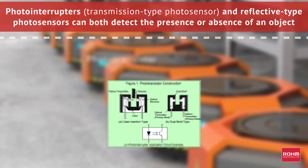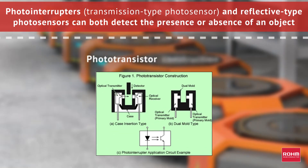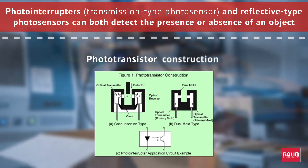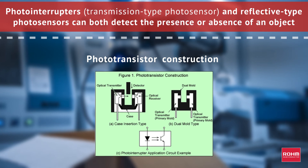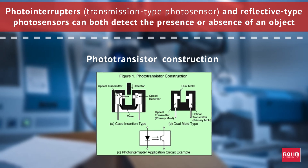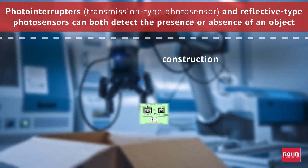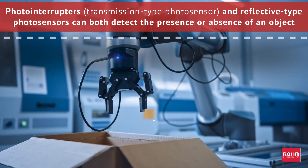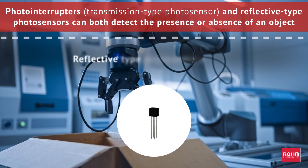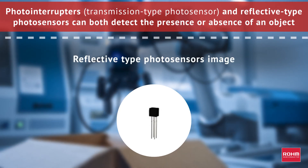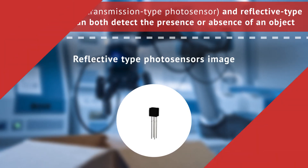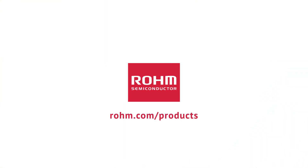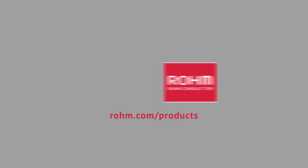This differs from reflective type photo sensors that detect the presence or absence of an object by emitting light and detecting the reflection from it. Both of these devices can be used for sensing position or speed of rotation. To learn more, visit Roam.com/products.